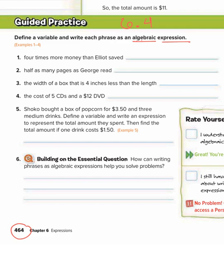So number 1, we have 4 times more money than Elliot saved. First, we need to figure out what do we need to give a variable to. What do we not know? We don't know how much Elliot saved.